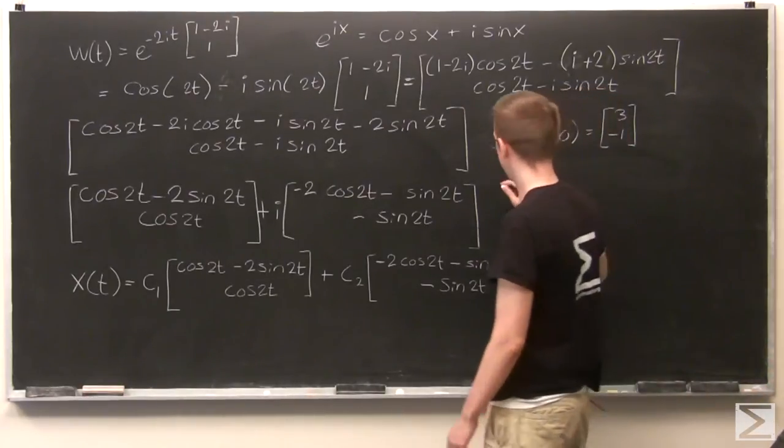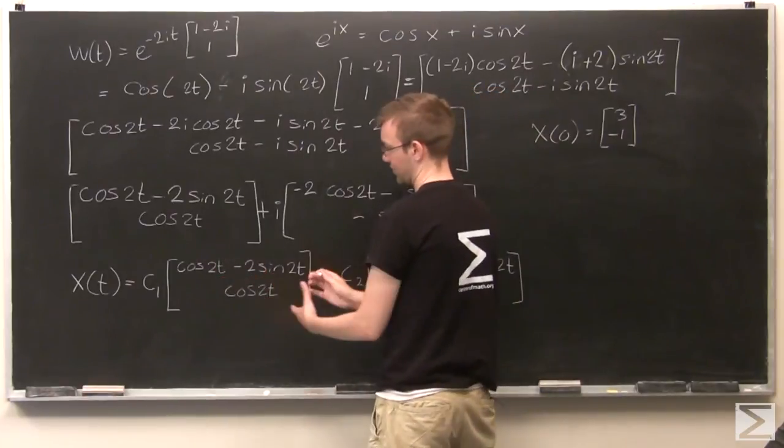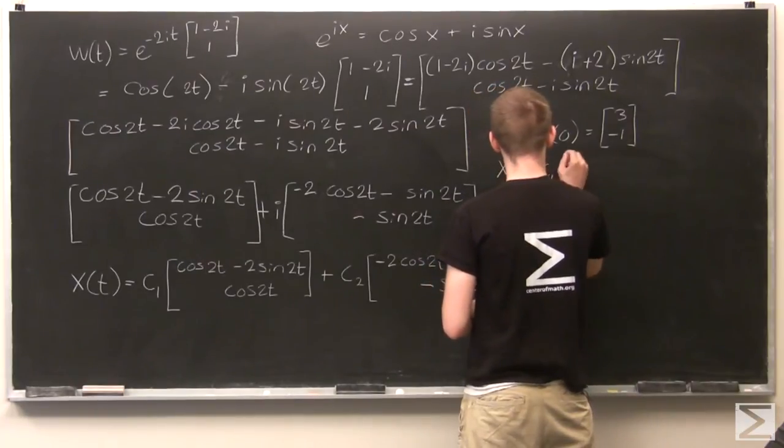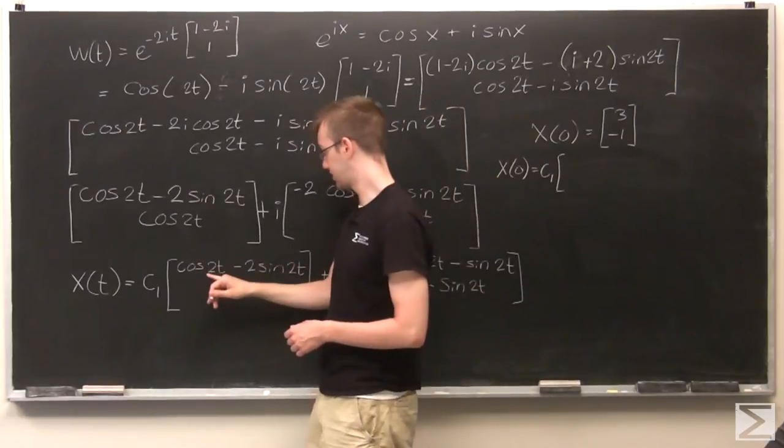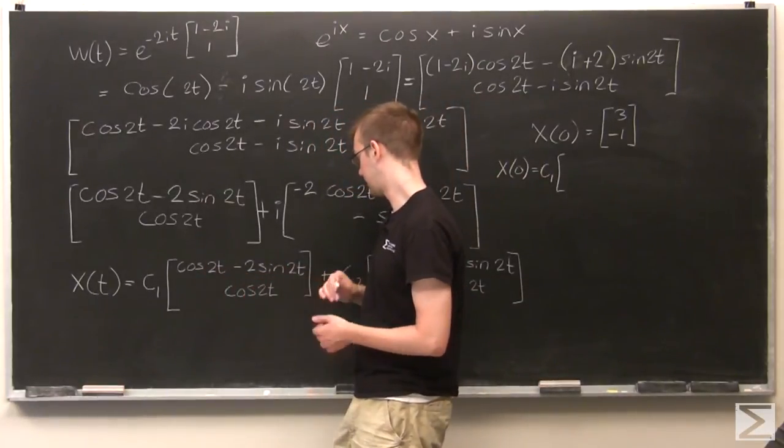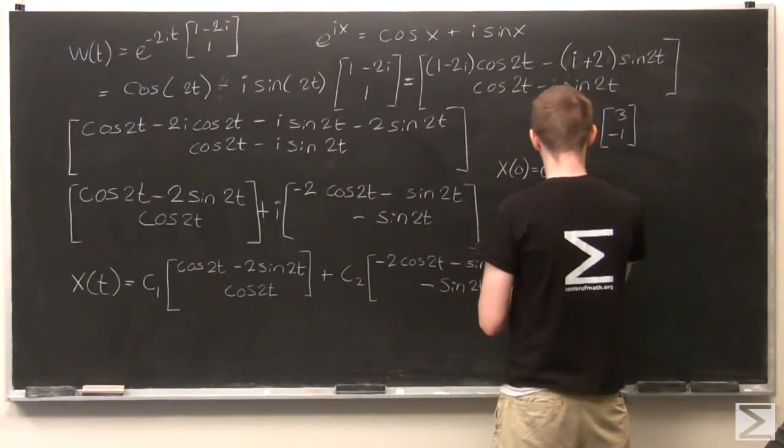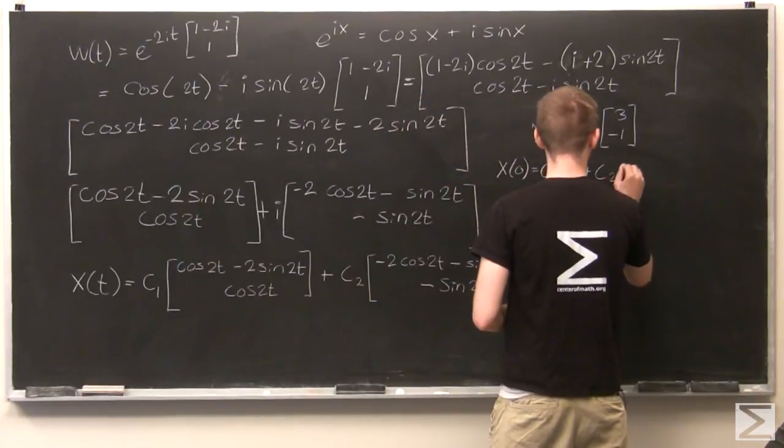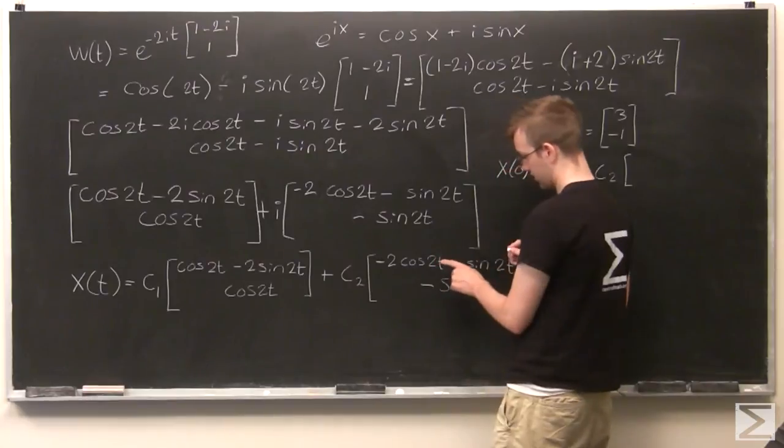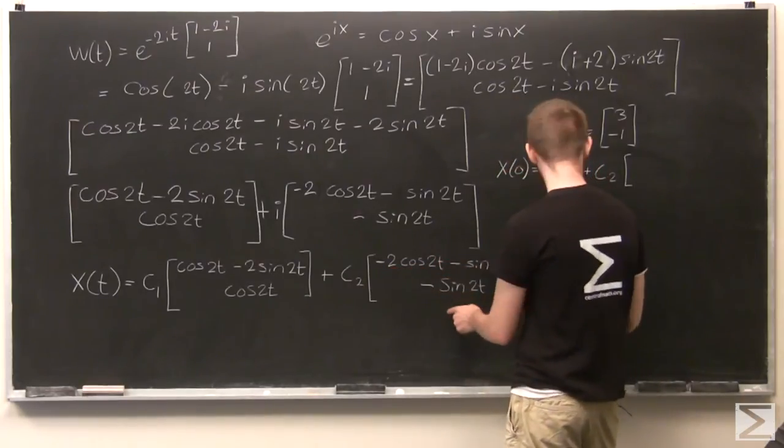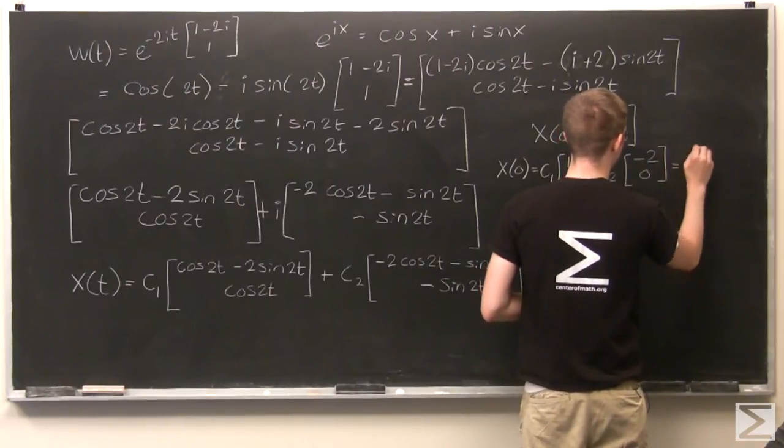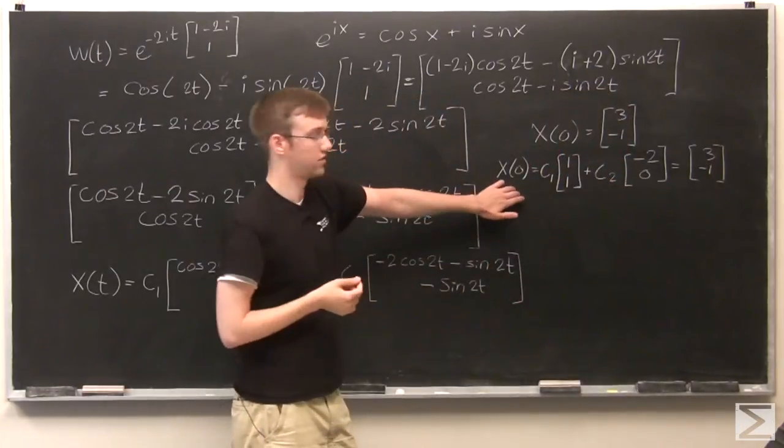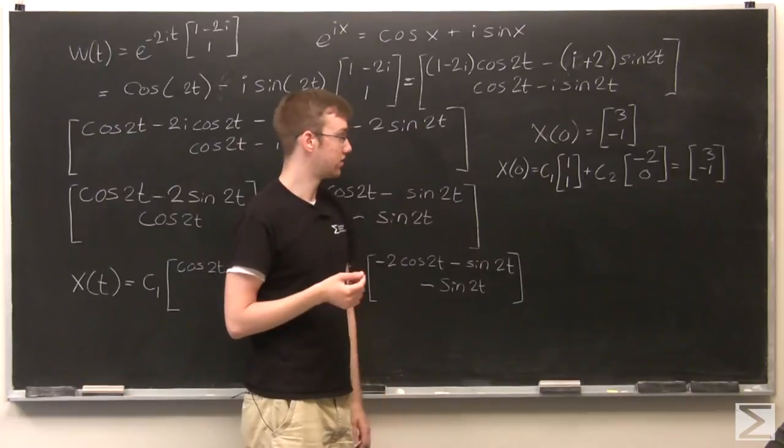So substituting 0 in for t, this is going to shorten these a lot. That's going to equal c1. Okay, cosine of 0 is 1, sine of 0 is 0. Yep, so that's just [1, 1]. Plus c2, cosine of 0 is 1, so that's [-2, 0]. All right, so I've got this system. Now I just need to find c1 and c2. And I can do that with a matrix.